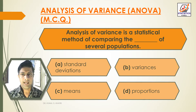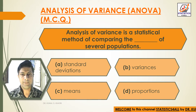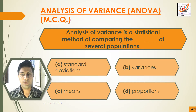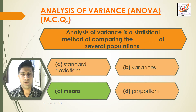Next question: ANOVA is a statistical method of comparing the dash of several populations. Option A: Standard Deviations. Option B: Variances. Option C: Means. Option D: Proportion. Answer: Option C, Means. Analysis of Variance is a statistical method of comparing the means of several populations.